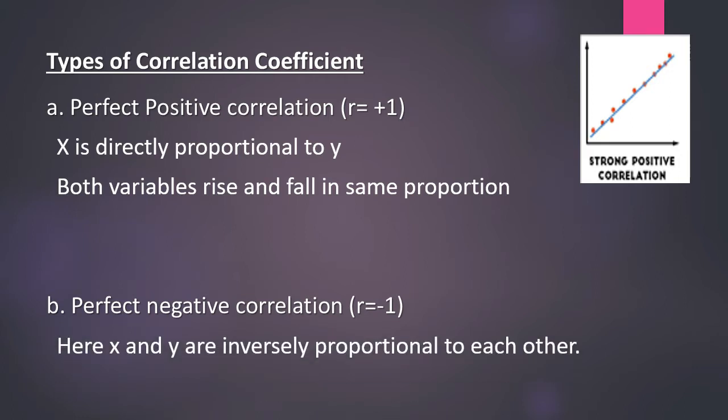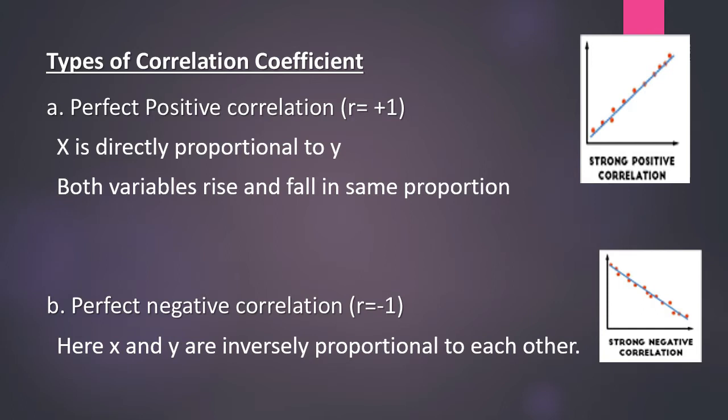In the given picture of perfect negative correlation you can see a negative proportionate relationship between the variables. An example is degree of freedom and discipline among students — once freedom increases, discipline decreases.